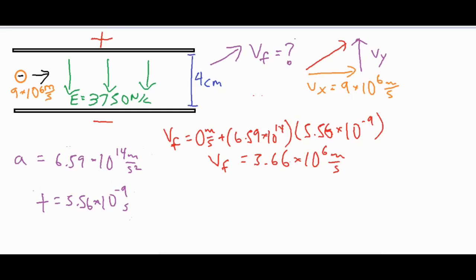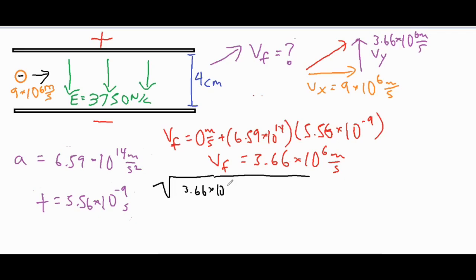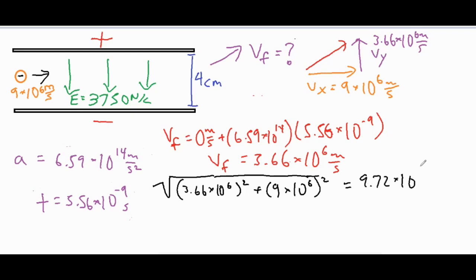We now have our vy of 3.66 times 10 to the 6th meters per second. We can use the Pythagorean theorem: taking the square root of (3.66 times 10 to the 6th) squared plus (9 times 10 to the 6th) squared. That gives us the final resultant velocity of 9.72 times 10 to the 6th meters per second.